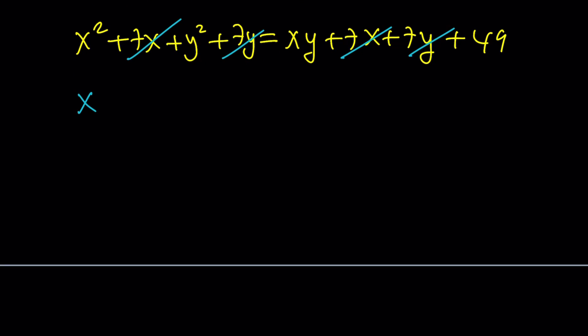So let's go ahead and distribute: x squared plus 7x plus y squared plus 7y. And then the bottom part is xy plus 7x plus 7y plus 49, which is 7 times 7. So some terms are going to cancel out, such as 7x plus 7y. And we're going to end up with something like this. Let's go ahead and put everything on the same side.